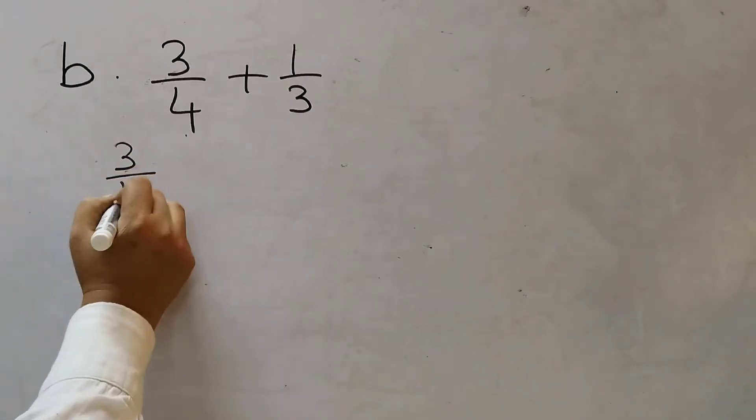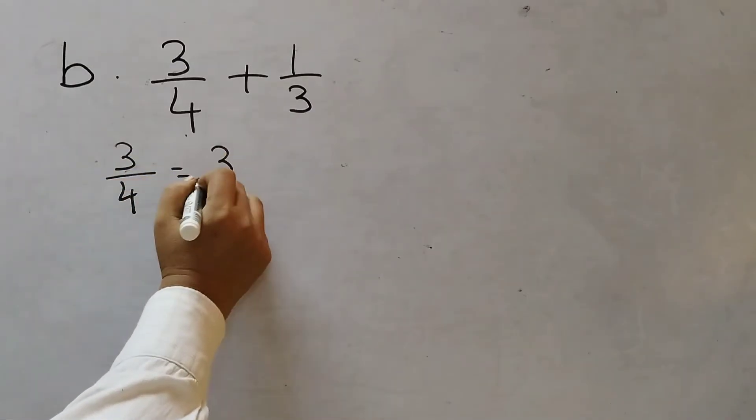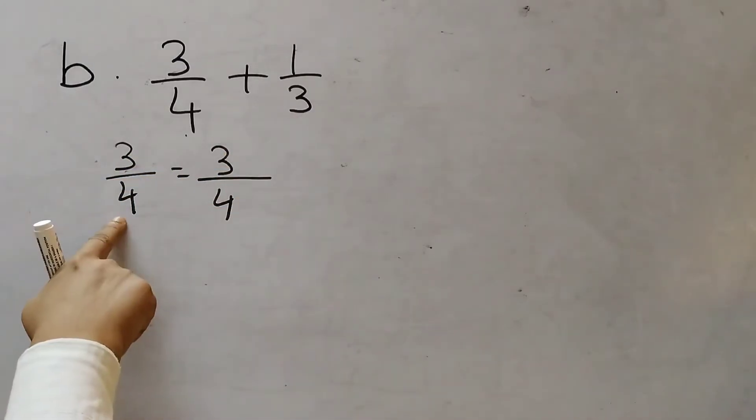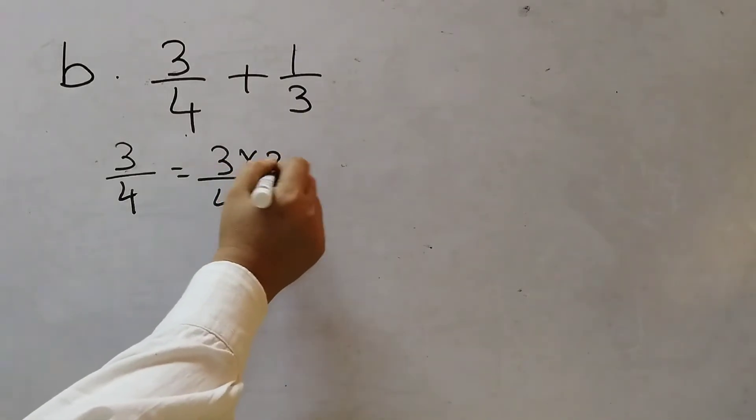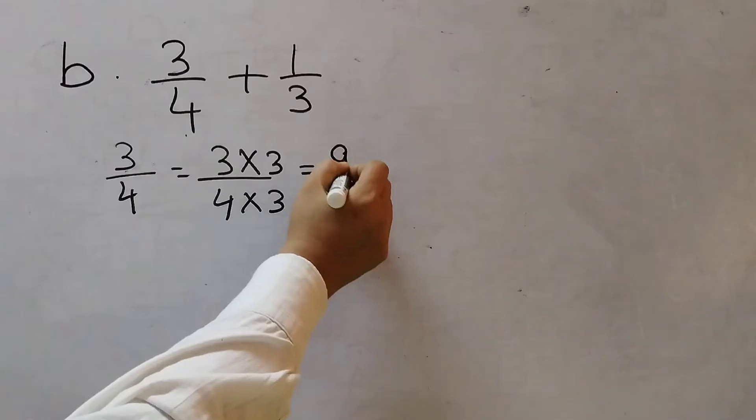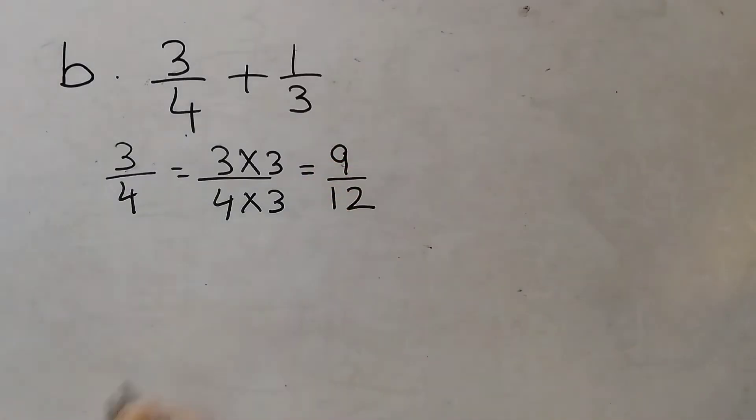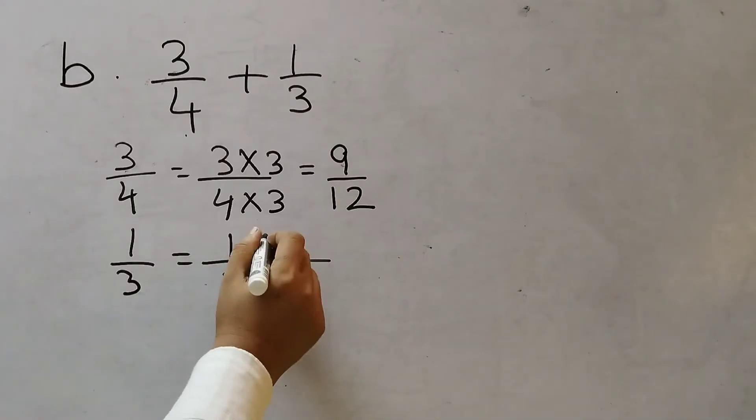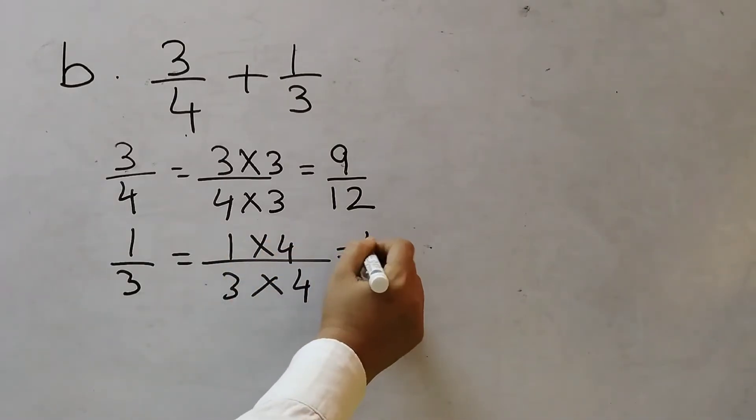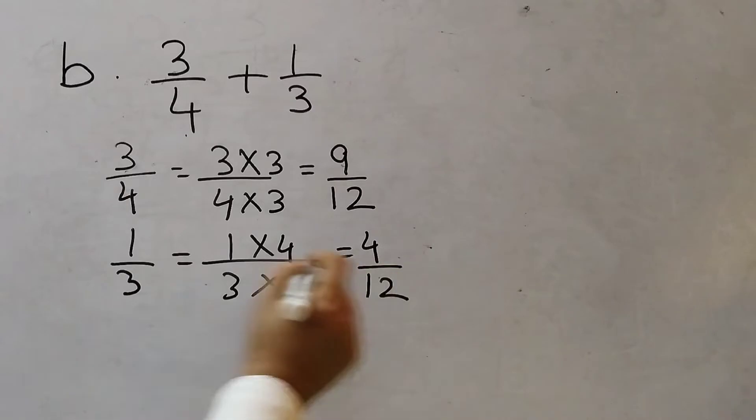So first we will do 3 by 4. 3 by 4. If I want to make this 12, I will multiply by 3. So here also I multiply by 3. So this would become 9 by 12. Next 1 by 3. So 1 by 3. Multiply 3 by 4. 3 into 4 is 12. So here also multiply by 4. 4 by 12.